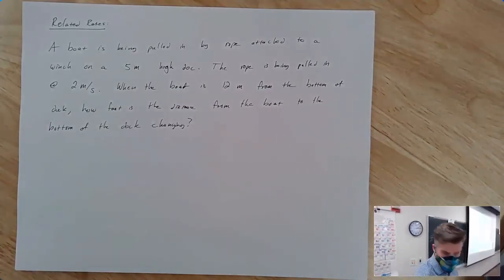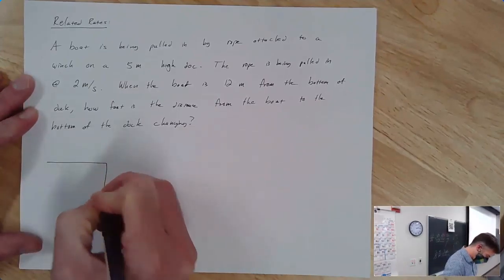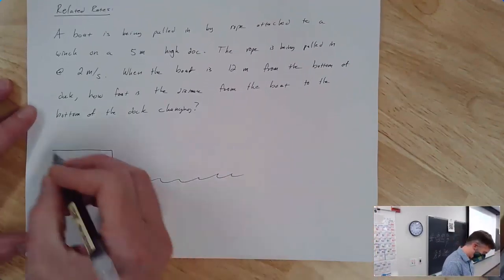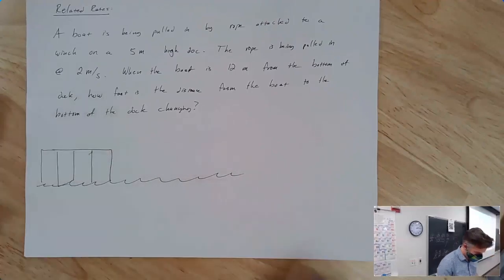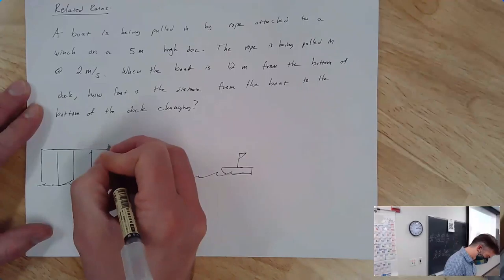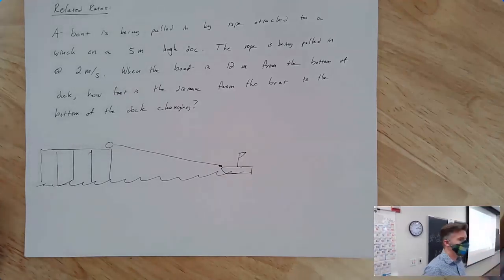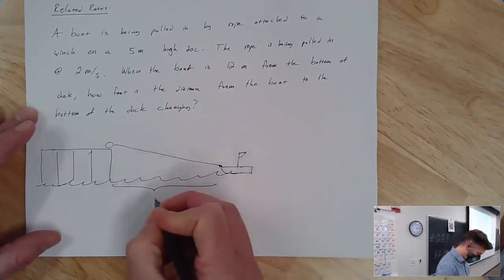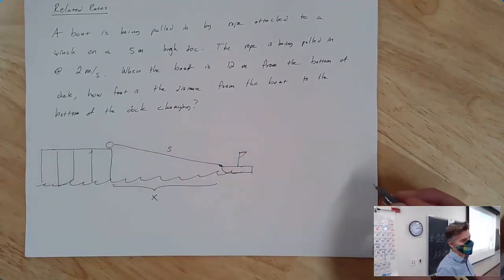As usual, we want to draw a picture. So here's my dock, something in the water, and here's my boat coming in, and here's the winch. We're going to label some things. The length from the boat to the bottom of the dock — let's call that x. And let's call the length from the boat to the winch z. I usually use s for diagonal lengths, but we'll use z.